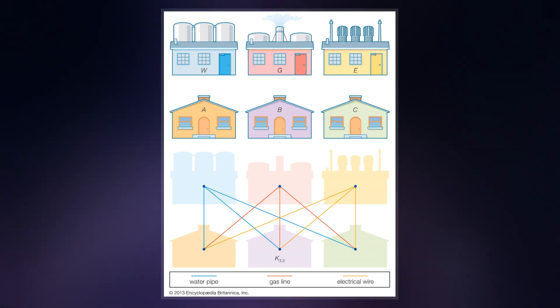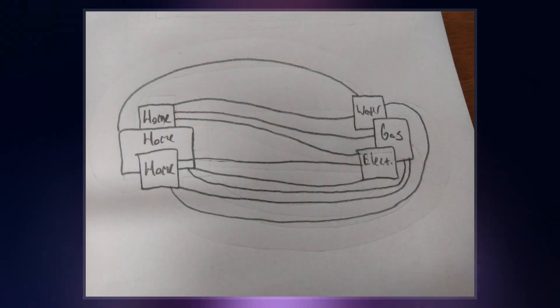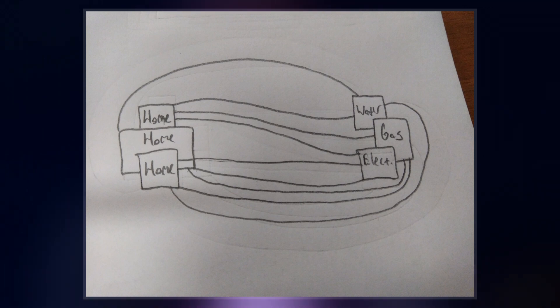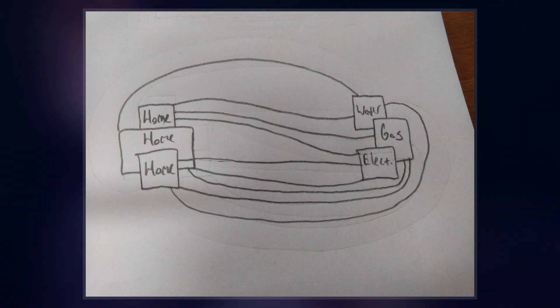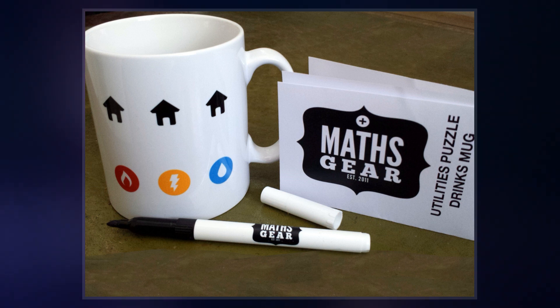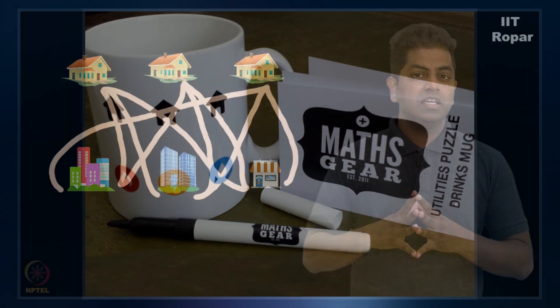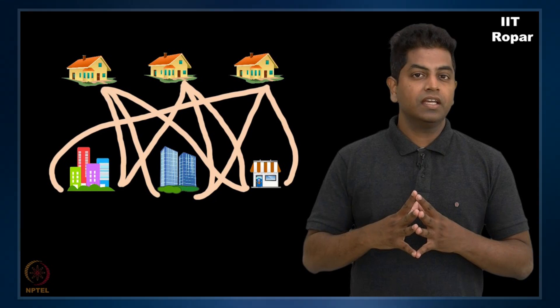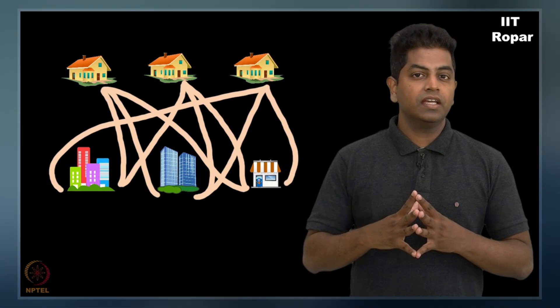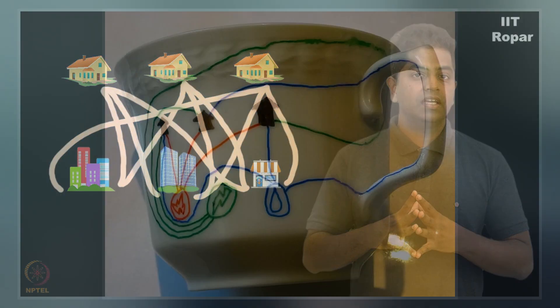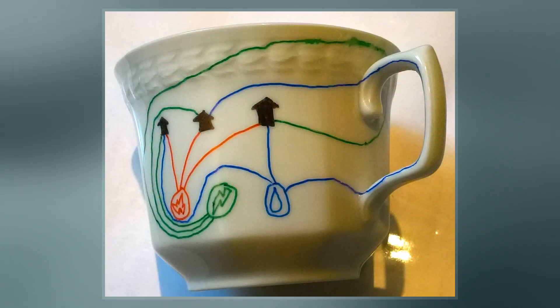This puzzle can be formalized as a problem in topological graph theory by asking whether the complete bipartite graph K3,3 with vertices representing the houses and utilities and edges representing their connections has a graph embedding in the plane.